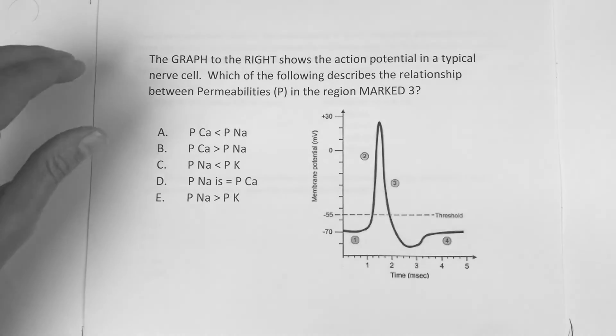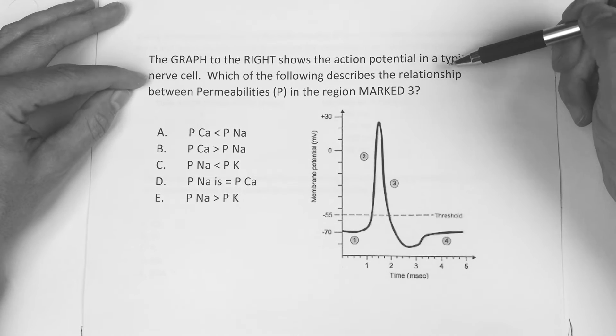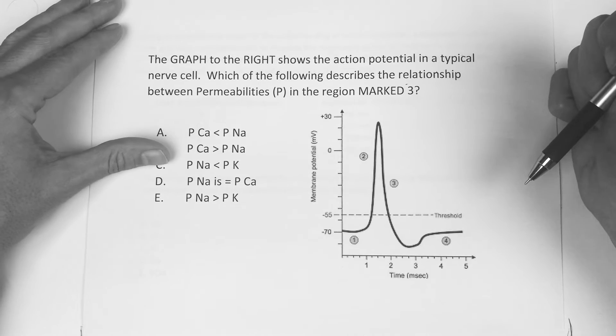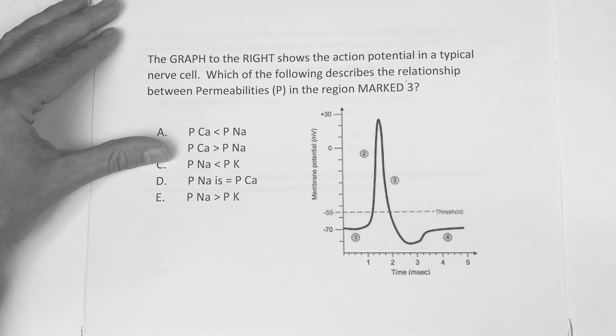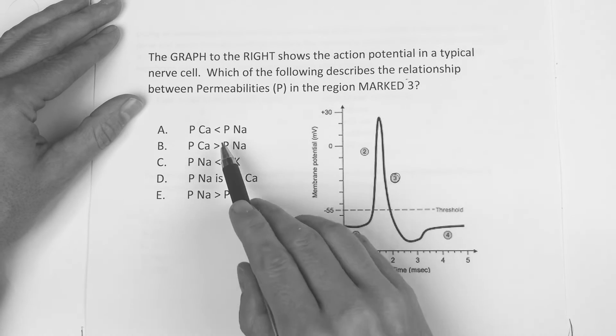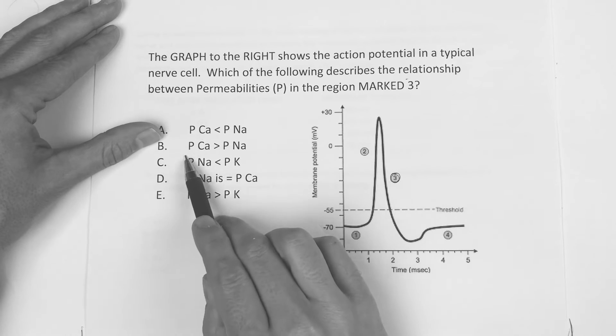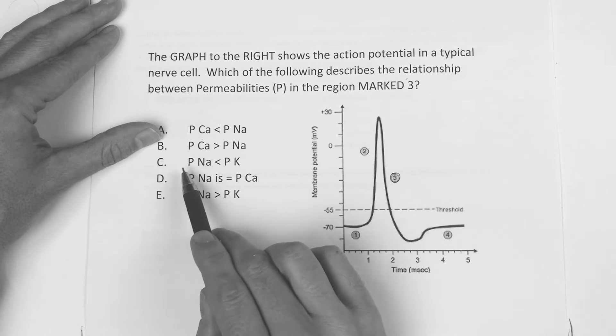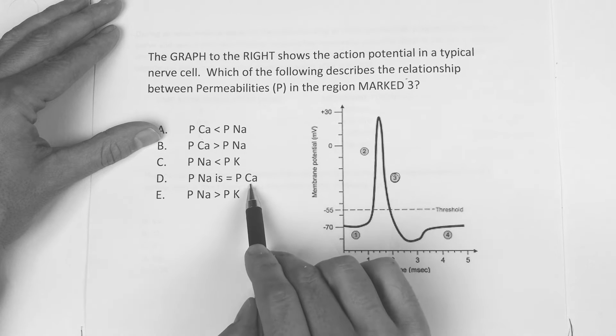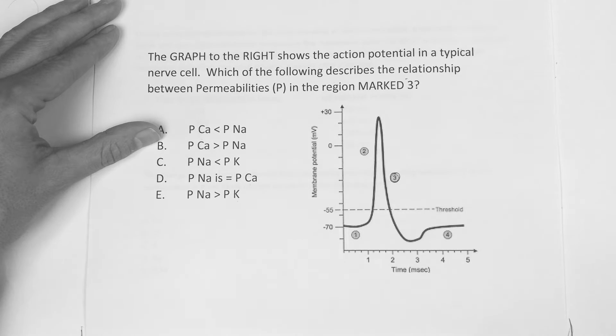Okay? This one says the graph to the right shows the action potential in a typical nerve cell, which of the following describes the relationship between permeabilities in the region marked 3. Okay. A little bit different, right? So see what you think. And 3 is right here if you can't see it very well. Is it A, the permeability of calcium is less than the permeability of sodium? Is it B, the permeability of calcium greater than sodium? C, sodium less than potassium? D, sodium and calcium are equal? Or E, sodium greater than potassium permeability? Okay.